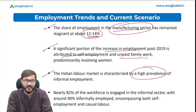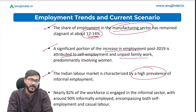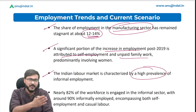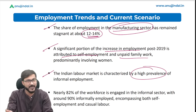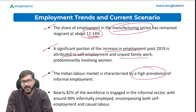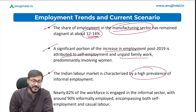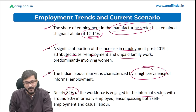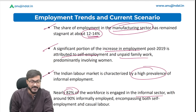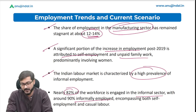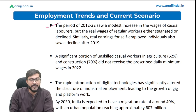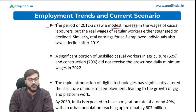Government steps such as the formalization of labor codes — where four labor codes were compressed — aim to formalize employment. However, nearly 82 percent of the workforce is engaged in the informal sector, where around 90 percent are informally employed, which is a very high percentage. The period of 2021–22 saw a modest increase in wages of casual labor.